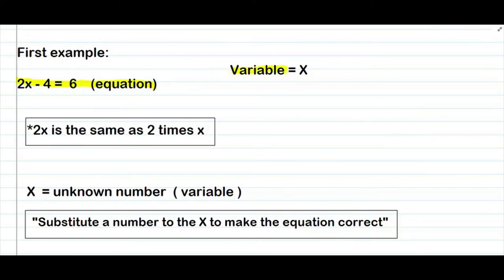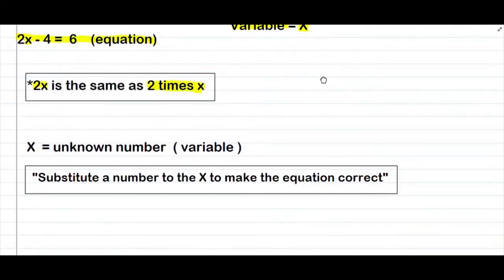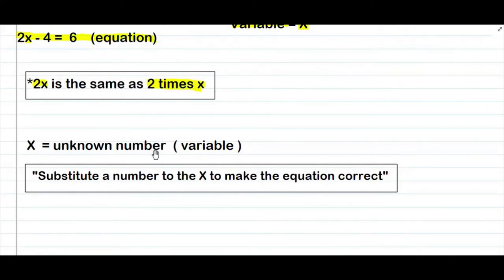Nakasulat dito, ang ating variable is yung x. Tulad ng sinabi natin kanina, ang variable ay isang letter na nagre-represent ng isang number. Meron siyang number na gusto itong i-represent, pero yun ang hahanapin natin. Ang ibig sabihin ng 2x ay 2 times x — yung 2, imumultiply mo sa x. Yung x natin is yung unknown number or the variable.